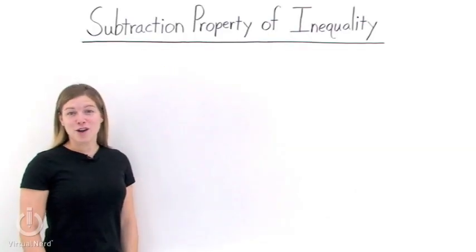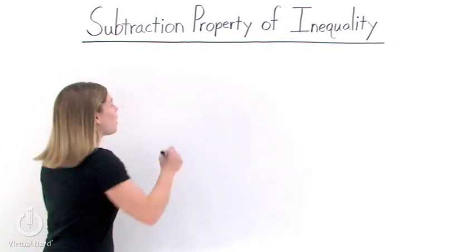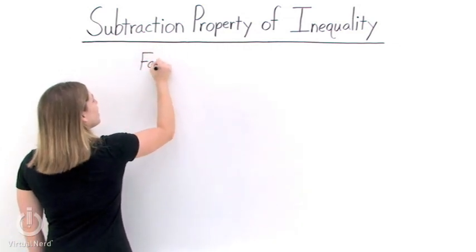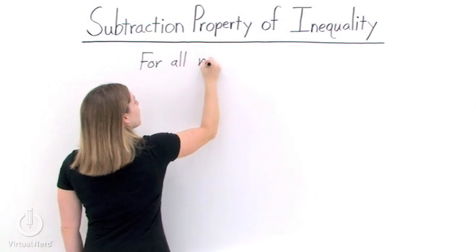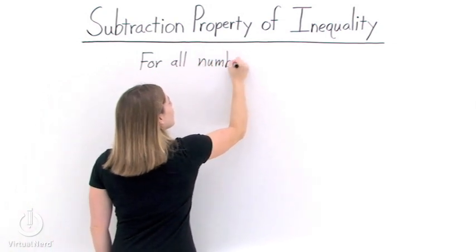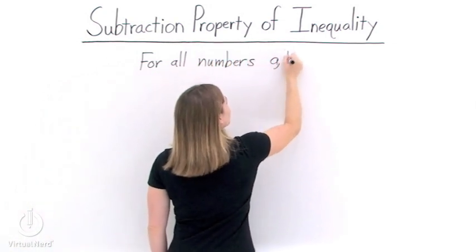What is the subtraction property of inequality? The subtraction property of inequality states that for all numbers a, b, and c, we can do this.